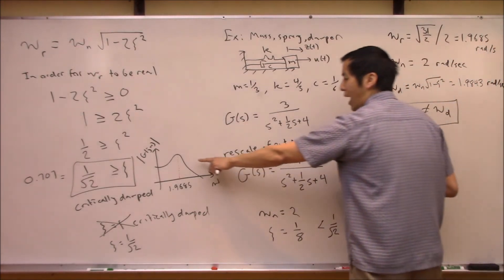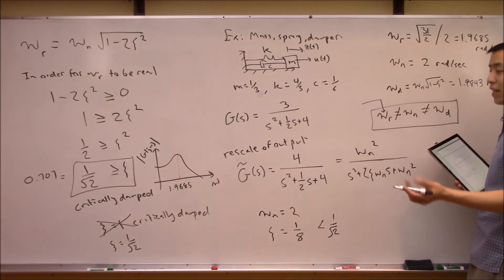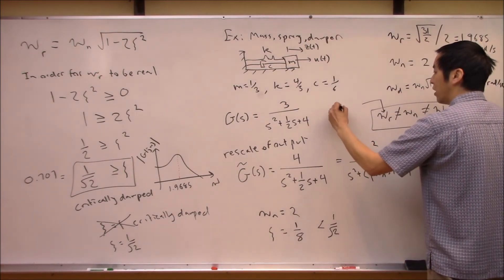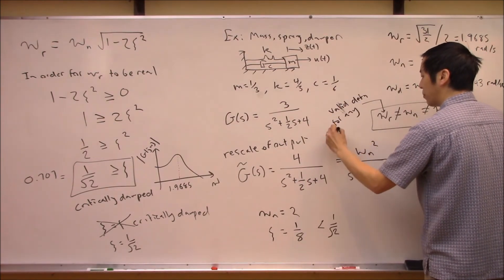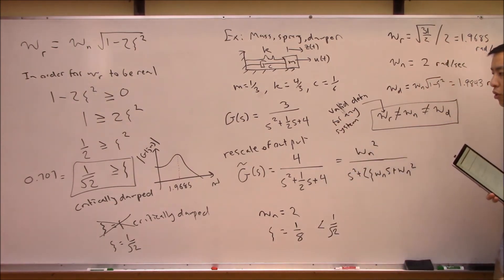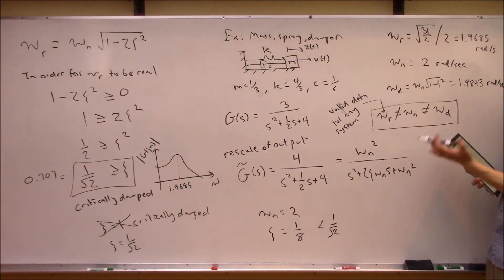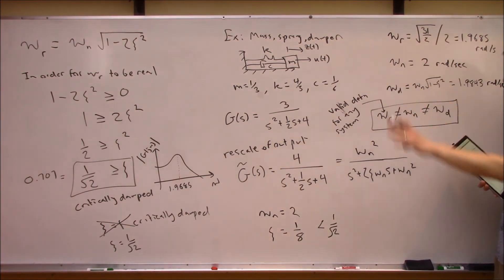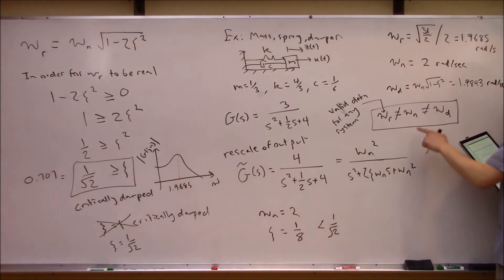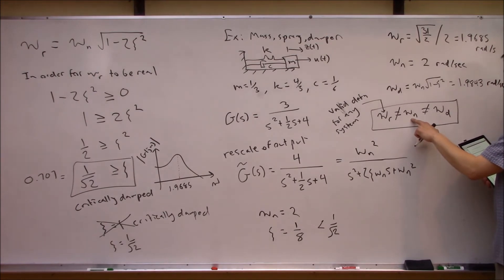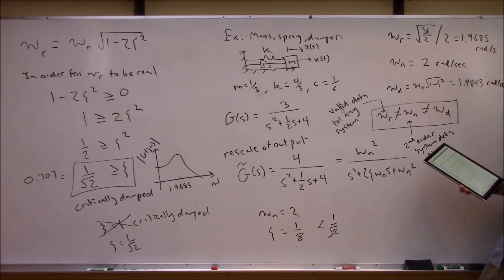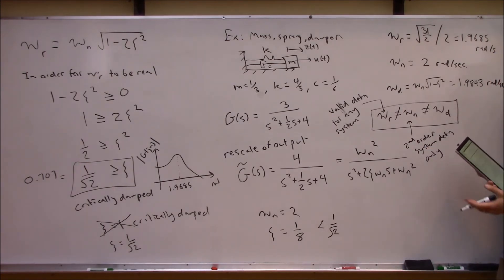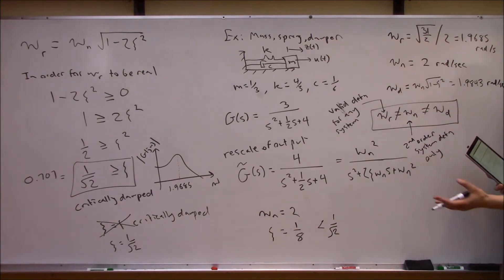A note on scope: the resonance frequency definition — the frequency yielding the maximum peak in the Bode plot — is valid for any system, whether it's third, fourth, or hundredth order. However, all the analysis we did here is only good for a second-order system. The concepts of natural frequency and damped natural frequency are really second-order system constructs only.